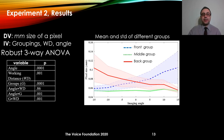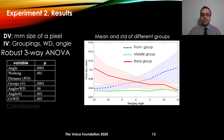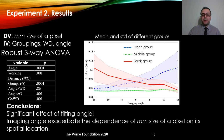To test the second hypothesis, we ran a three-way ANOVA with millimeter size of a pixel as the dependent variable and grouping, working distance, and angle as independent variables. Results showed significant effects for all main effects, as well as significant interactions of angle with grouping and angle with working distance. This indicates a significant effect of tilting angle, and because of the significant interaction, we conclude that imaging angle exacerbates the dependence of millimeter size of a pixel on its spatial location.